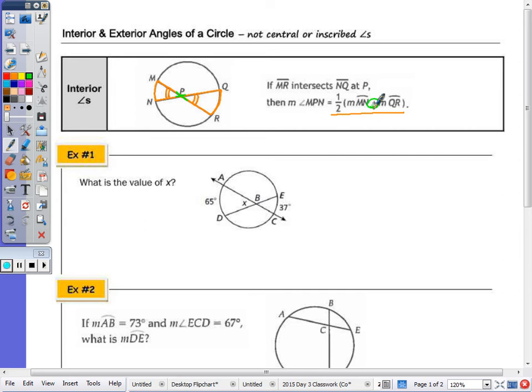In question number one, what is the value of X? X, this angle here, intercepts this arc and is congruent to this angle here which intercepts that arc. Using the theorem, X is equal to one half the sum of those two arcs, so 65 plus 37. One half of 102 gives us an angle measure of 51 degrees.